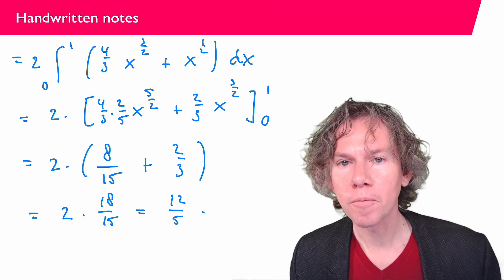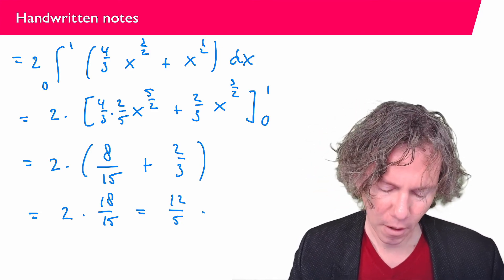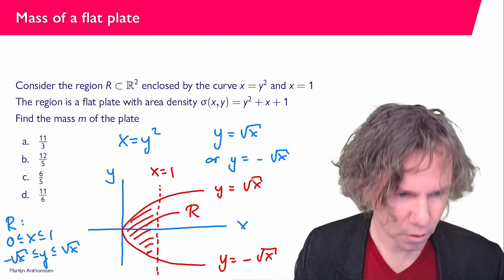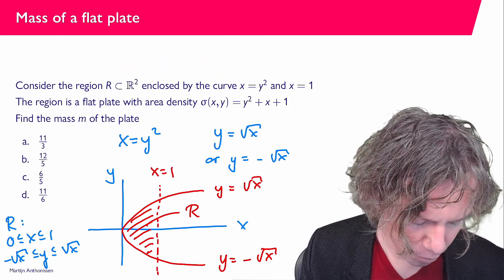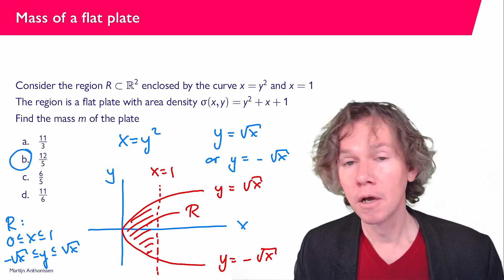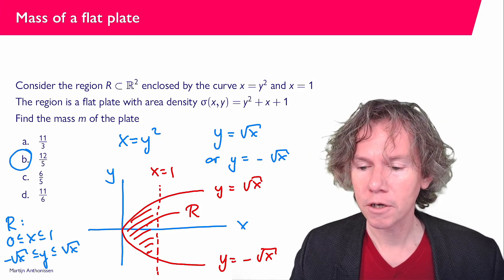So apparently the mass of the plate here is 12 over 5 so let's see if that is within the options we were given in the multiple choice question and indeed it is. So apparently the correct answer here was B, 12 over 5. That wraps up this question I hope all was clear and I'll see you in the next video.